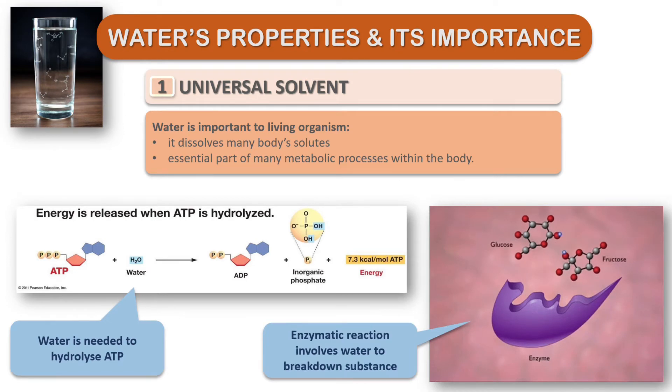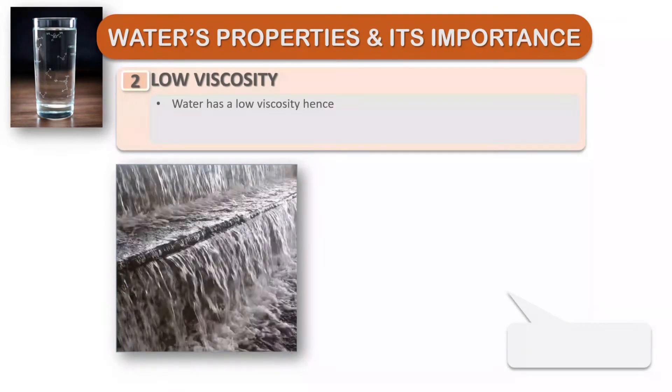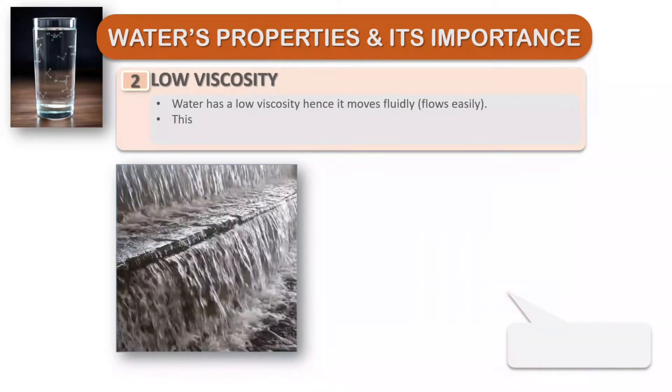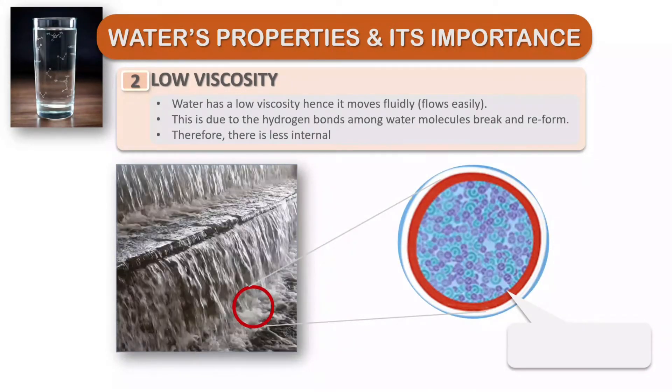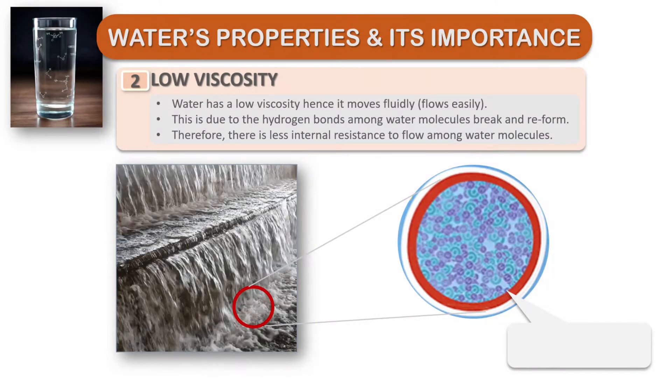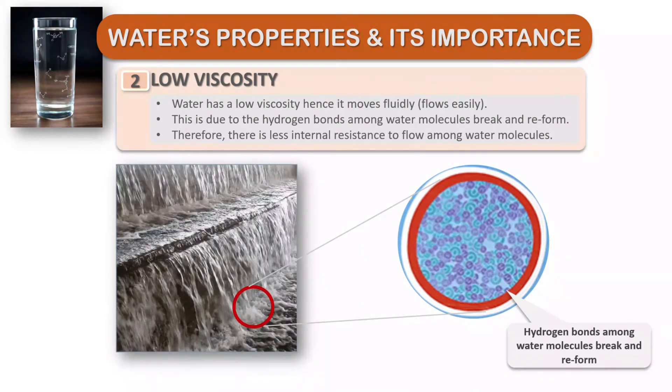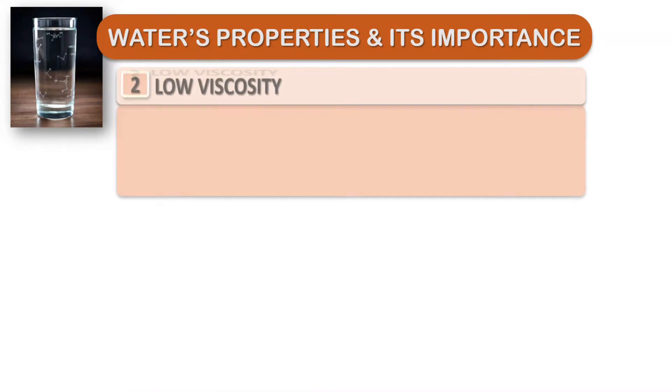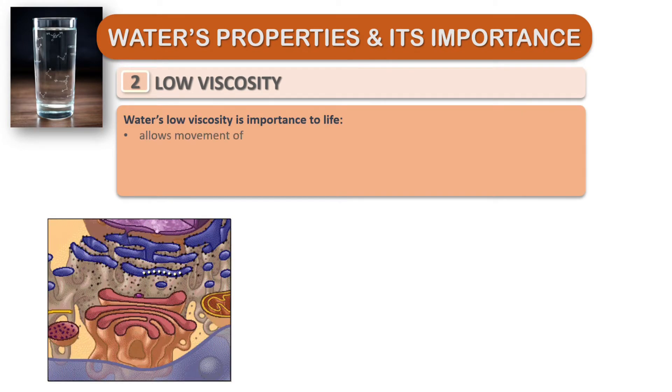For example, water is needed to hydrolyze ADP. Enzymatic reactions involve water to break down substances. Water has low viscosity, hence it moves fluidly or flows easily. This is due to the hydrogen bonds among water molecules breaking and reforming, therefore there is less internal resistance to flow among water molecules.